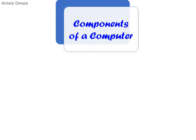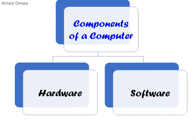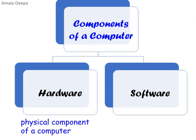A computer has two important components: hardware and software. Hardware is the physical component of a computer. Software is a set of instructions or programs.